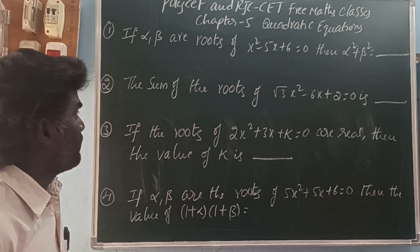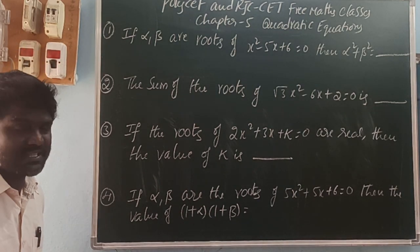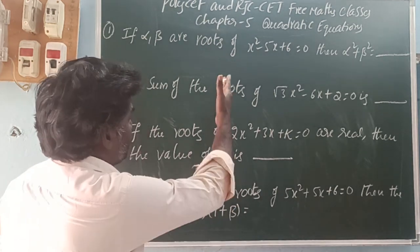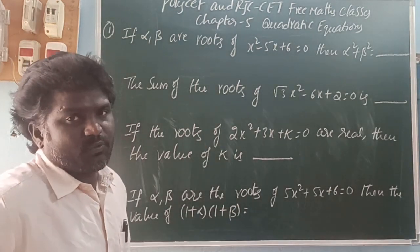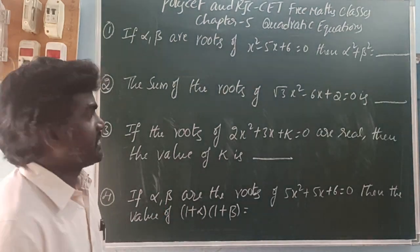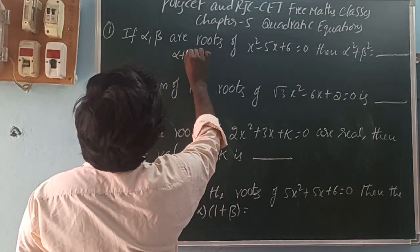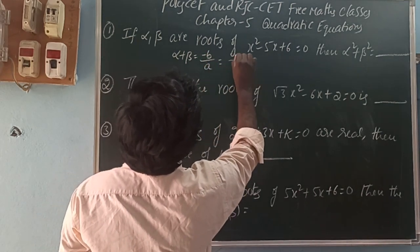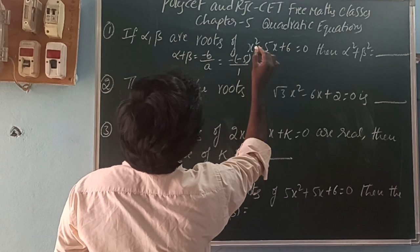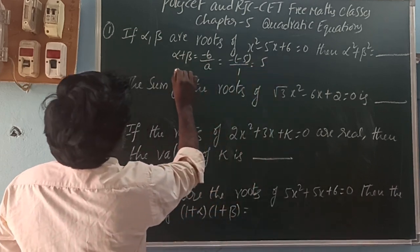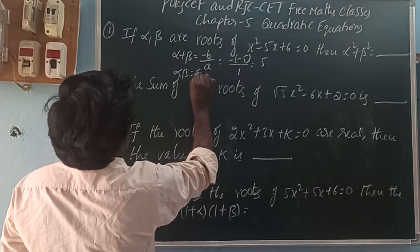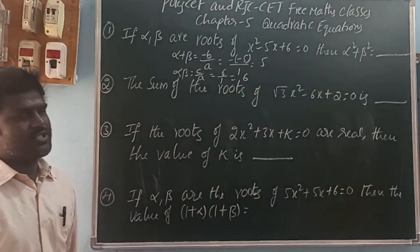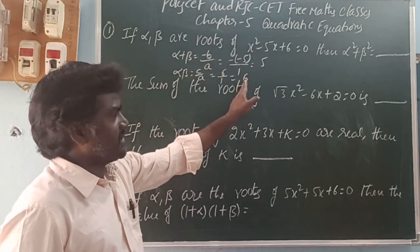First one: if alpha, beta are roots of the equation x² - 5x + 6 = 0, then find alpha² + beta². It is a quadratic equation. The sum of the zeros is alpha + beta = -b/a. Here b is -5, a is 1, so minus minus gives plus 5. Next, alpha × beta = c/a. c value is 6 by 1 = 6. So sum of the zeros is 5, product of zeros is 6.